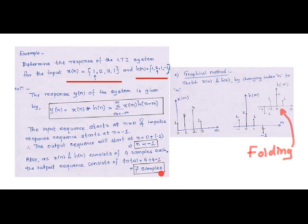To start with the graphical method initially we sketch x and h. Before that we have changed the index of the original x and h to m. So we have chosen h for folding operation and the folded impulse response is sketched here.